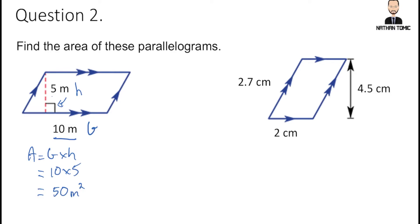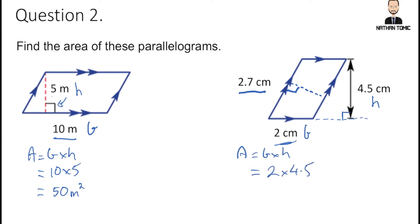The second example is trickier because we have three measurements and need to decide which is the base and which is the height. Looking at the 2.7, we don't have a perpendicular measurement for it. But looking at the 2, we find that the 4.5 is in fact perpendicular to it when we extend the base line. So the base is 2 and the height is 4.5. Area = 2 × 4.5 = 9 centimeters squared.